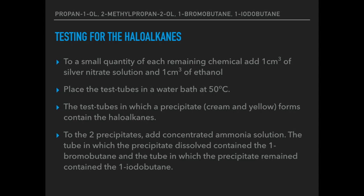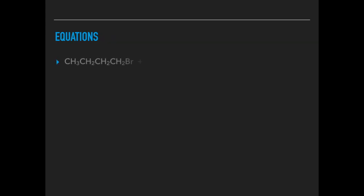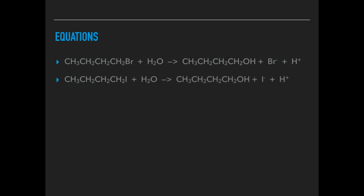Because the cream and yellow colours are fairly similar, add concentrated ammonia solution to the two precipitates. In one of the tubes the precipitate dissolves — that must be the 1-bromobutane, because silver bromide dissolves in concentrated ammonia, whereas silver iodide does not. The precipitate that remains must have been the iodobutane. The equations show the hydrolysis of each haloalkane generating a halide ion, which reacts with silver ions to form the silver bromide or silver iodide precipitate.